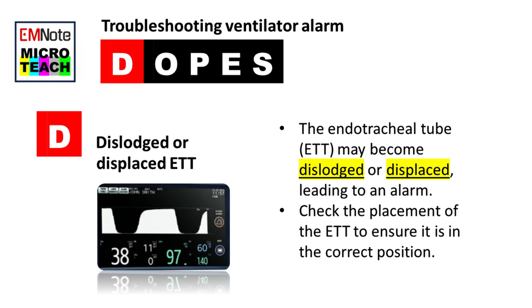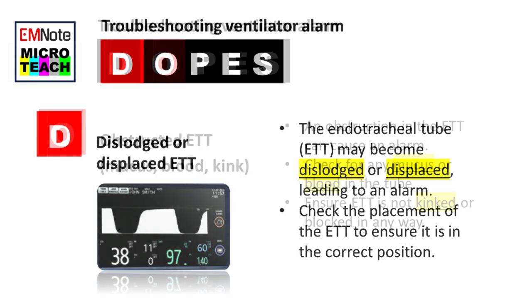D stands for dislodged or displaced endotracheal tube. The endotracheal tube may become dislodged or displaced, leading to an alarm. Check the placement of the endotracheal tube to ensure it is in the correct position.